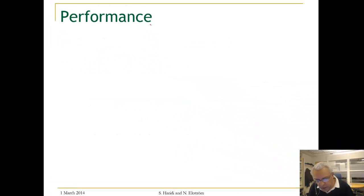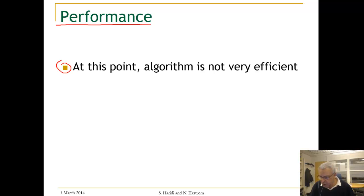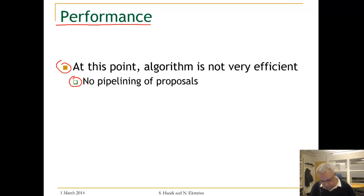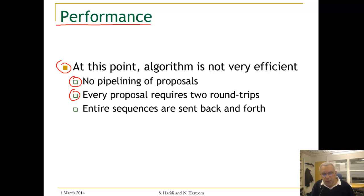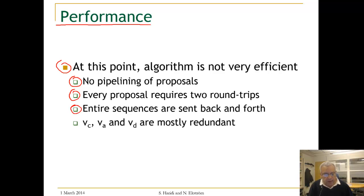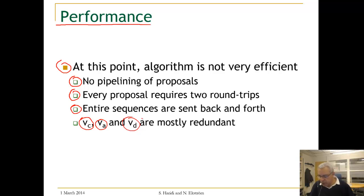We are looking at the issue of performance. At this point the algorithm is not very efficient because the proposals are not pipelined — every proposer requires two round trips. The entire sequences are sent back and forth, and the sequences at the acceptors, at the proposers, and at the decided sequence are mostly redundant. We will now add optimizations to fix this.